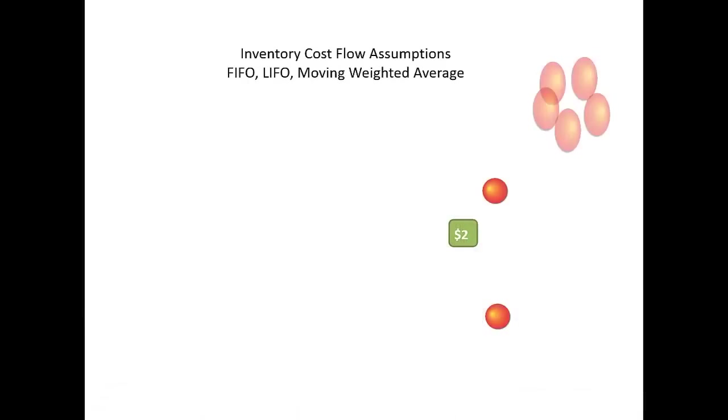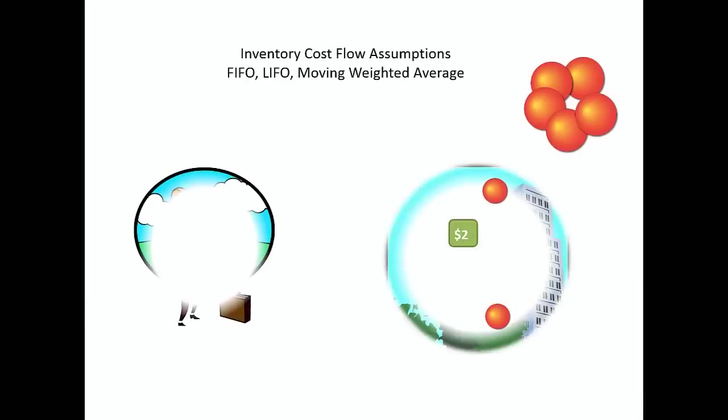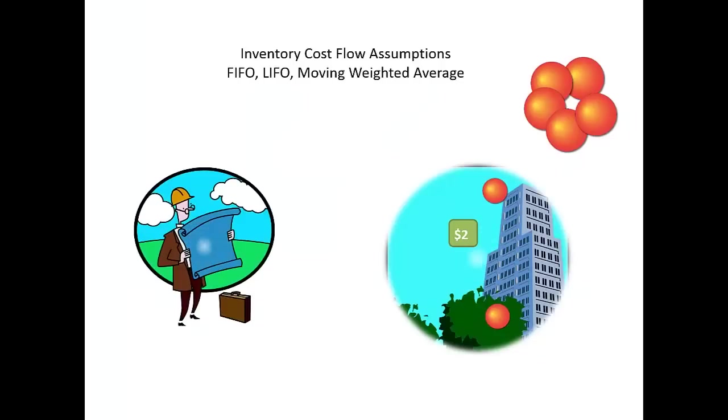Because management doesn't know which gumball was sold, it will simply assume which unit cost was sold by using one of the following three cost flow assumptions.